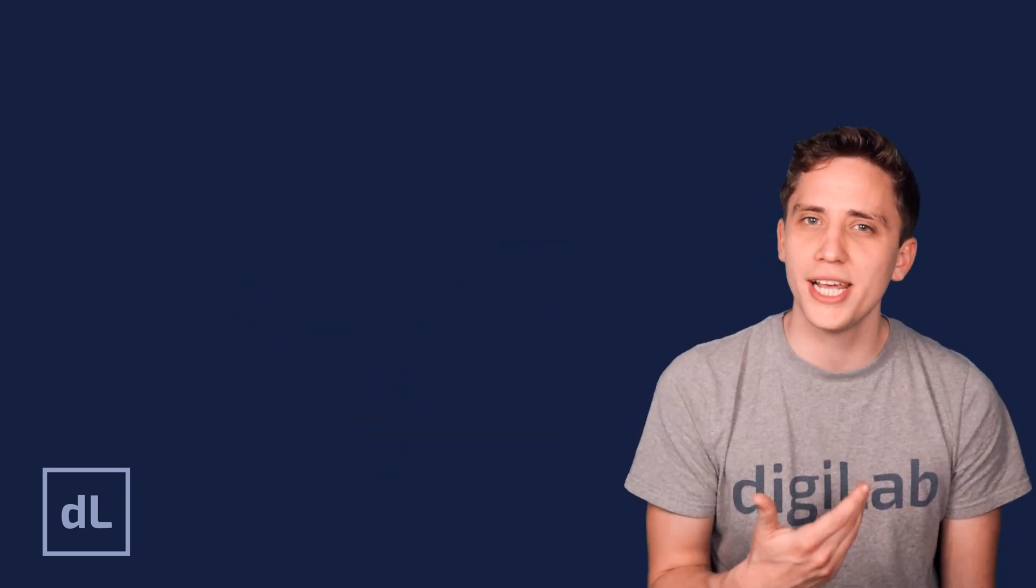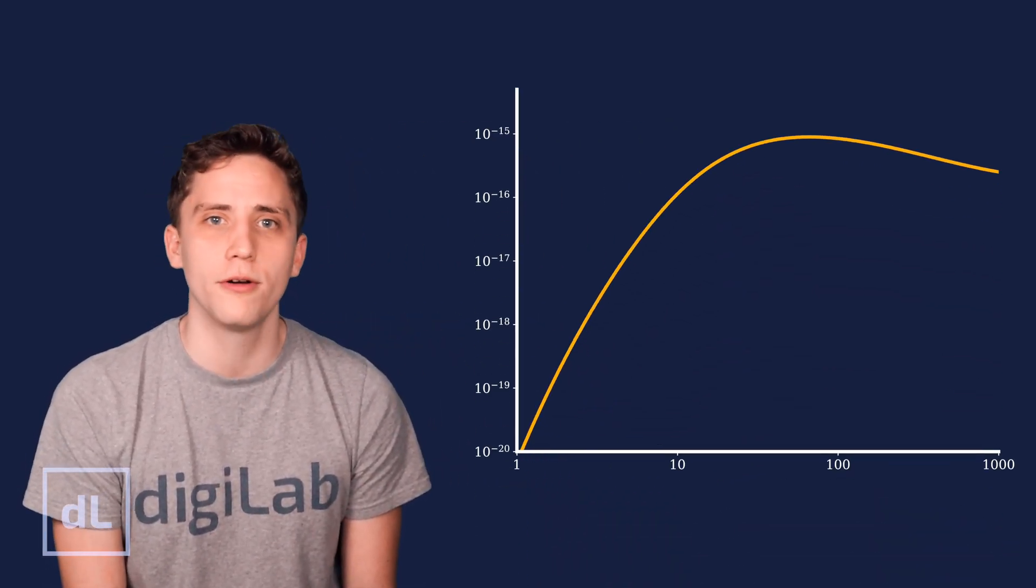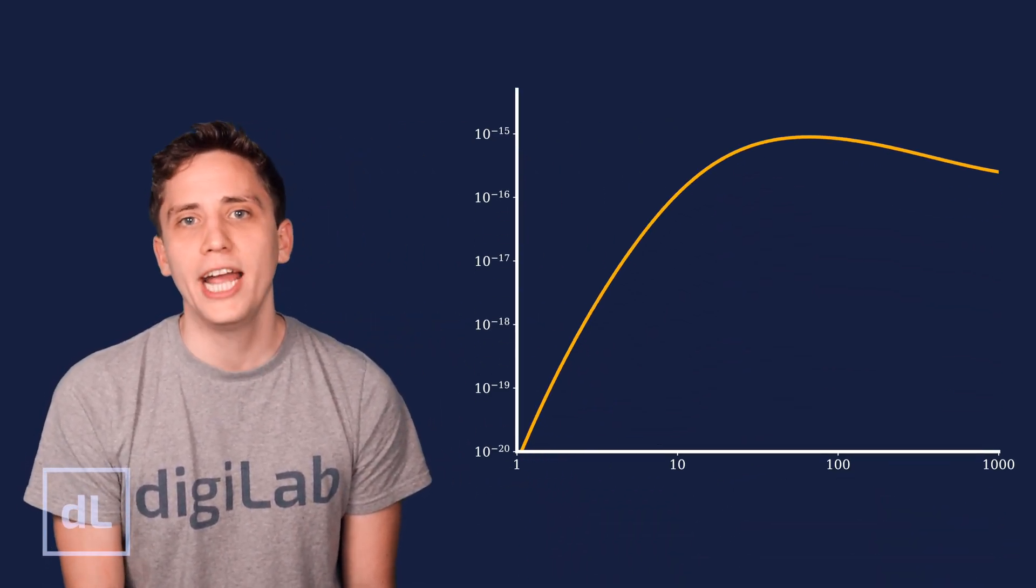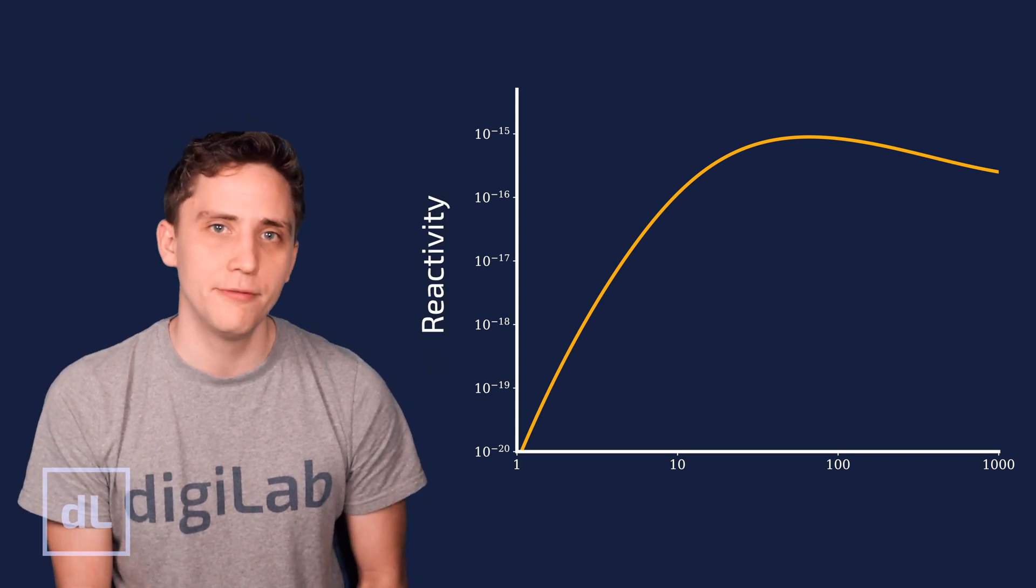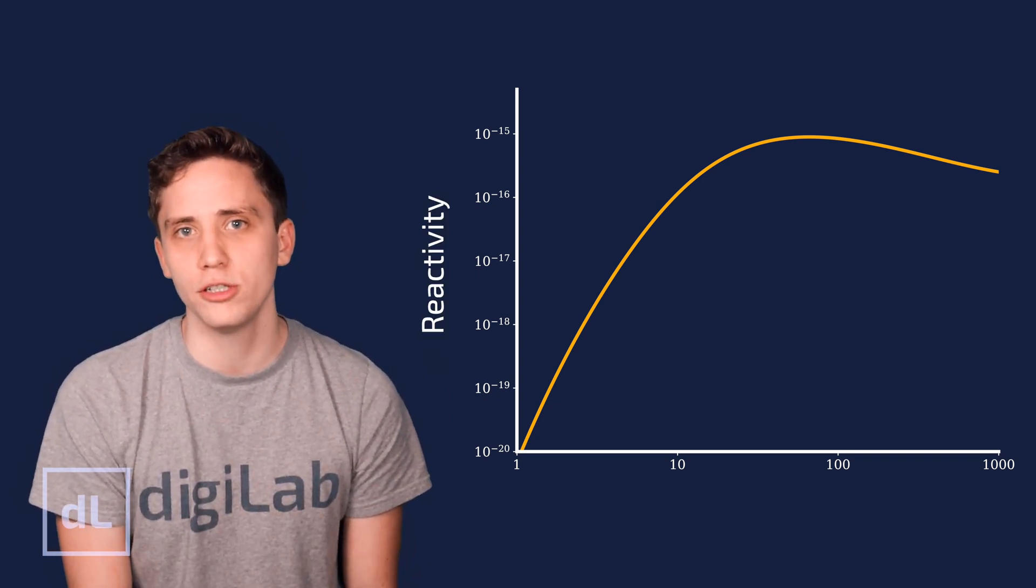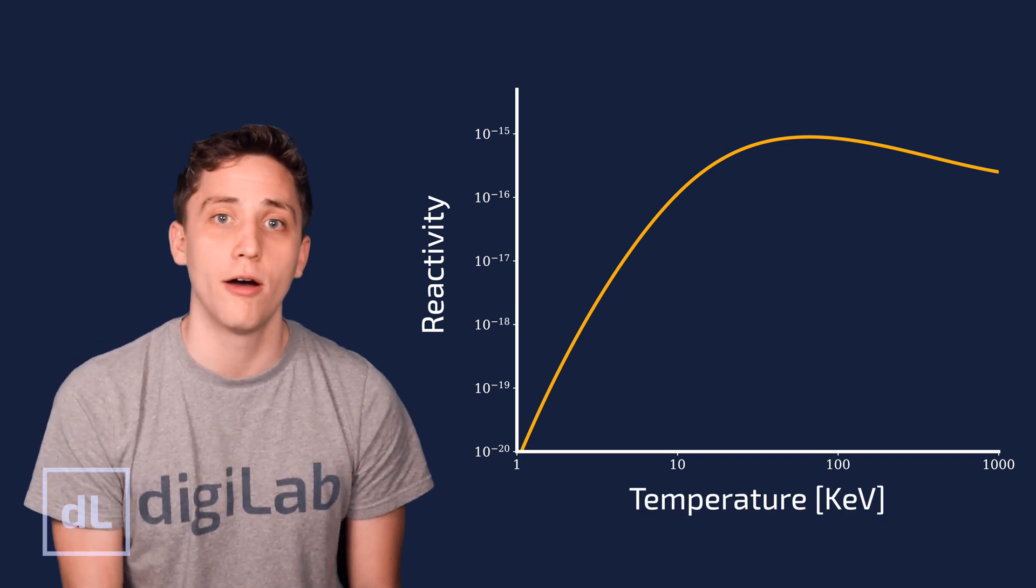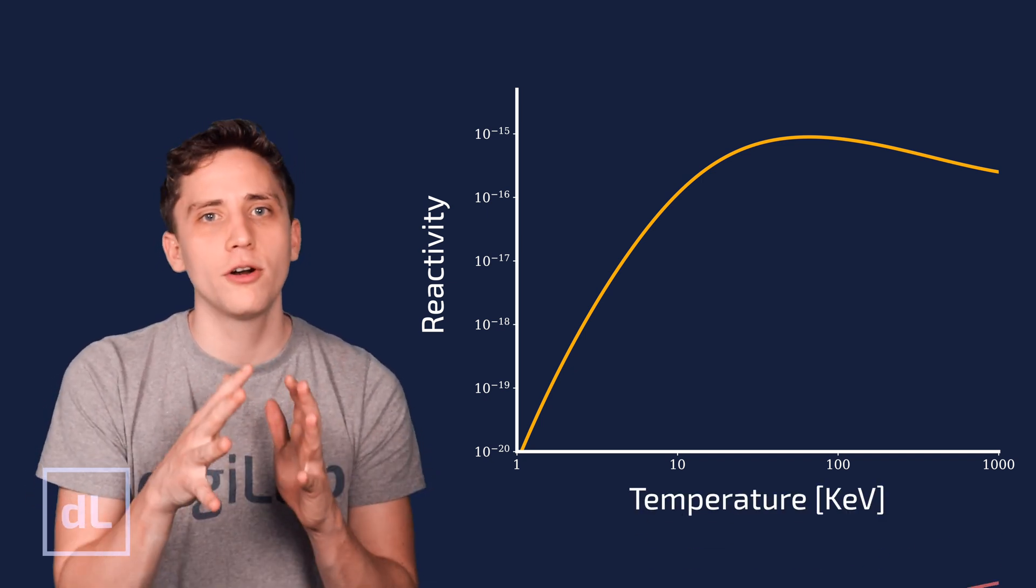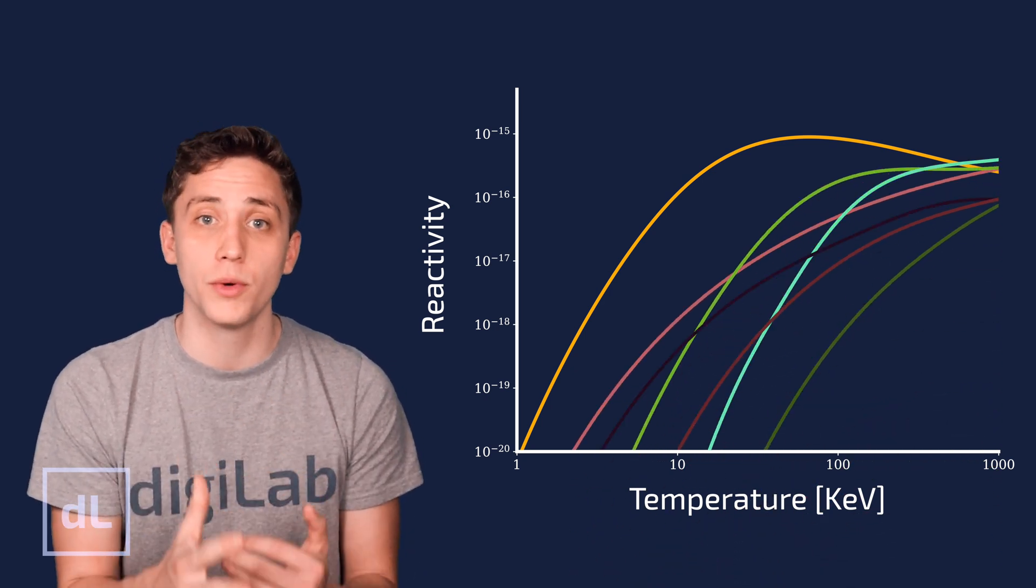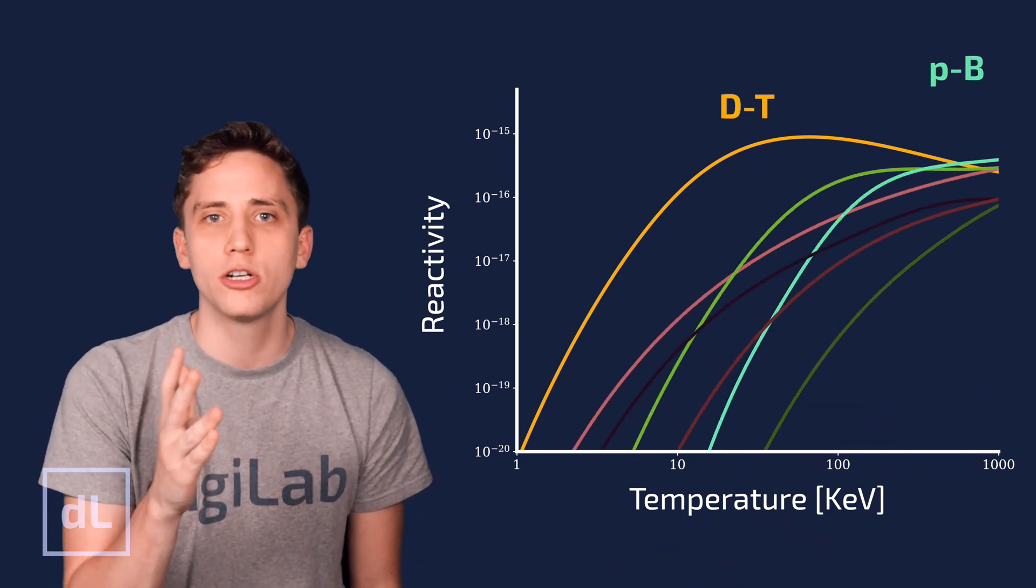So how much energy is enough? Well, we can answer that question and some other ones with this figure here, a very important figure for fusion. It shows what's called the reactivity, which is essentially the likelihood of a successful fusion reaction as a function of temperature on the x-axis of the fuel. And it shows this for a load of different candidate fuels that we could use for fusion, things like deuterium and tritium or protons and boron.